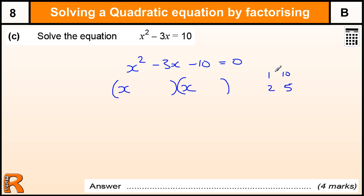Because it's minus 10 here, one's positive, one's negative. Because it's minus 3 here, the bigger of the two is negative. So it's either minus 10 or minus 5. Which of these two add to give us minus 3? Well this adds to give us minus 9. This one adds to give us minus 3.